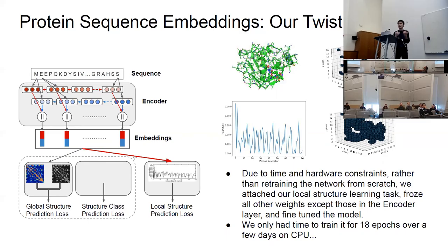We looked at this and thought: why stop there? Let's include local structural tasks as well, because in terms of alignment, we might want to find pockets of the proteins that are locally similar. So we tried adding that. In the interest of time, we're not going to talk about the details of that local structural task.